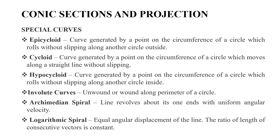An epicycloid is generated by a point on the circumference of a circle which rolls without slipping along another circle on the outside. A cycloid is generated by a point on the circumference of a circle which moves along a straight line without slipping.